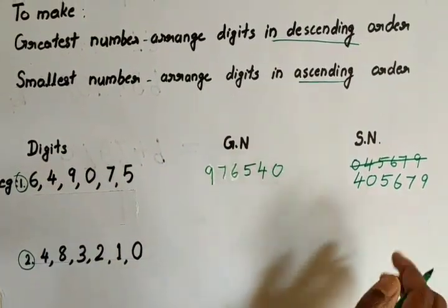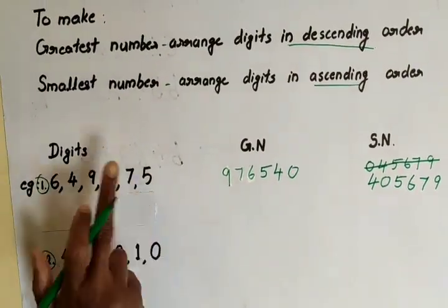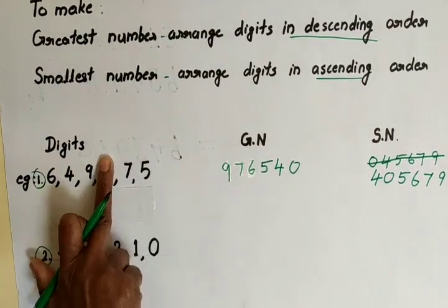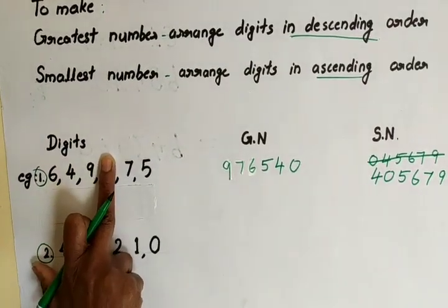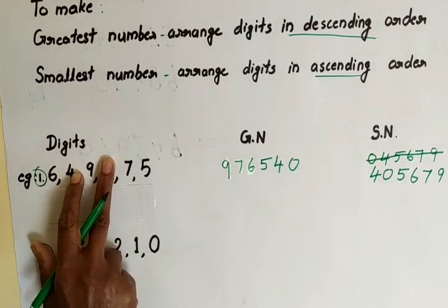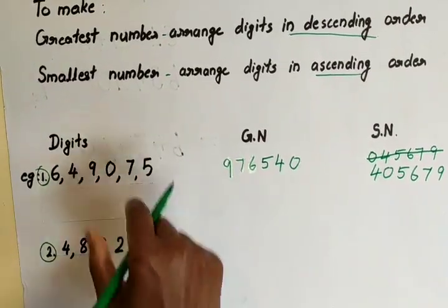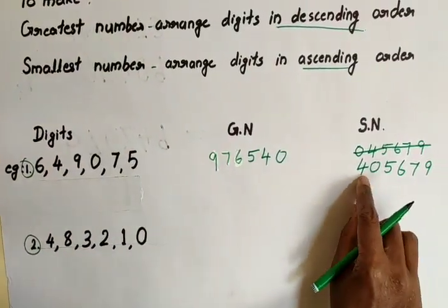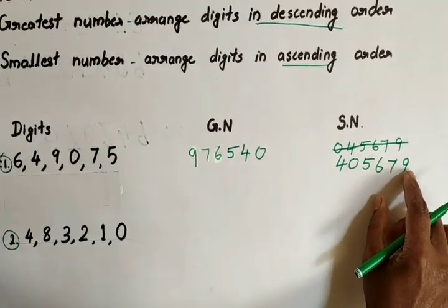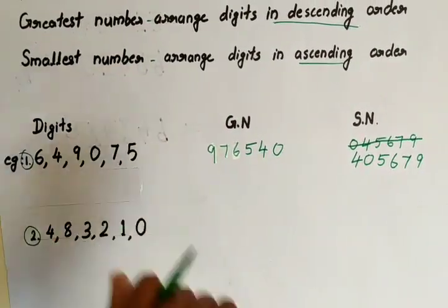To repeat: if 0 is in the digits, leave 0, find the next smallest. What is the next smallest? 4 — write 0 after the next. That is 4, 0, 5, 6, 7, 9.